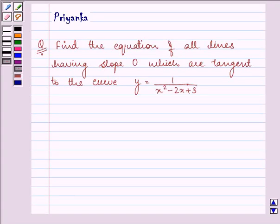Hello friends, how are you all doing today? The question says, find the equation of all lines having slope 0 which are tangent to the curve y = 1/(x² - 2x + 3).